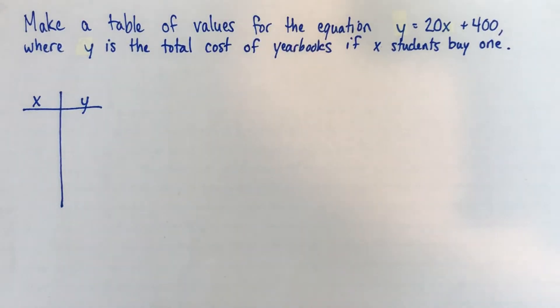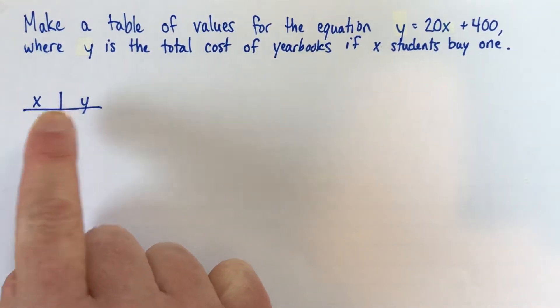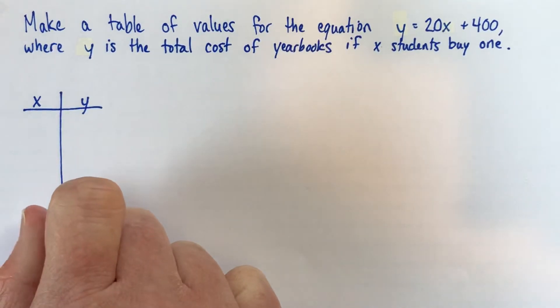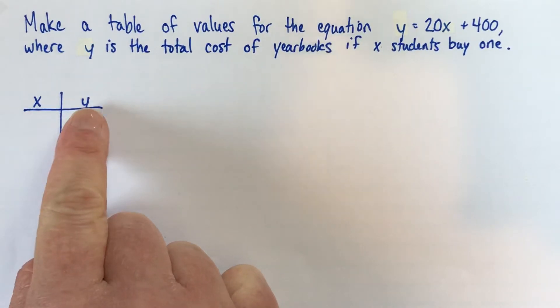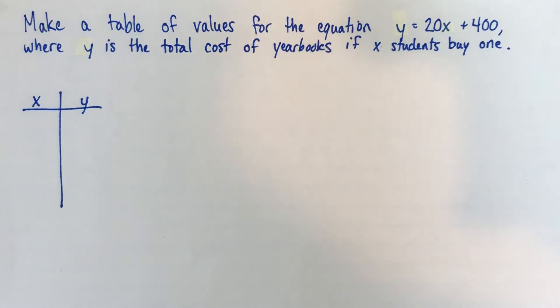Alright, so we're going to make a table of values. I've already sort of just sketched out a quick little table here. It's important when you make your table of values, your x value needs to go on the left, and y goes on the right. Or in other words, x is your independent variable, if you know what that means, and y is your dependent variable. So x on the left. You can think of it as alphabetical order if you're using x and y.